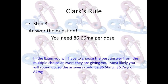Step three: answer the question. You need 86.66 milligrams per dose. On the exam, you will have to choose the best answer from the multiple choice options given. Most likely you will round up, so the answer could be 86.66 milligrams, 86.7 milligrams, or 87 milligrams.